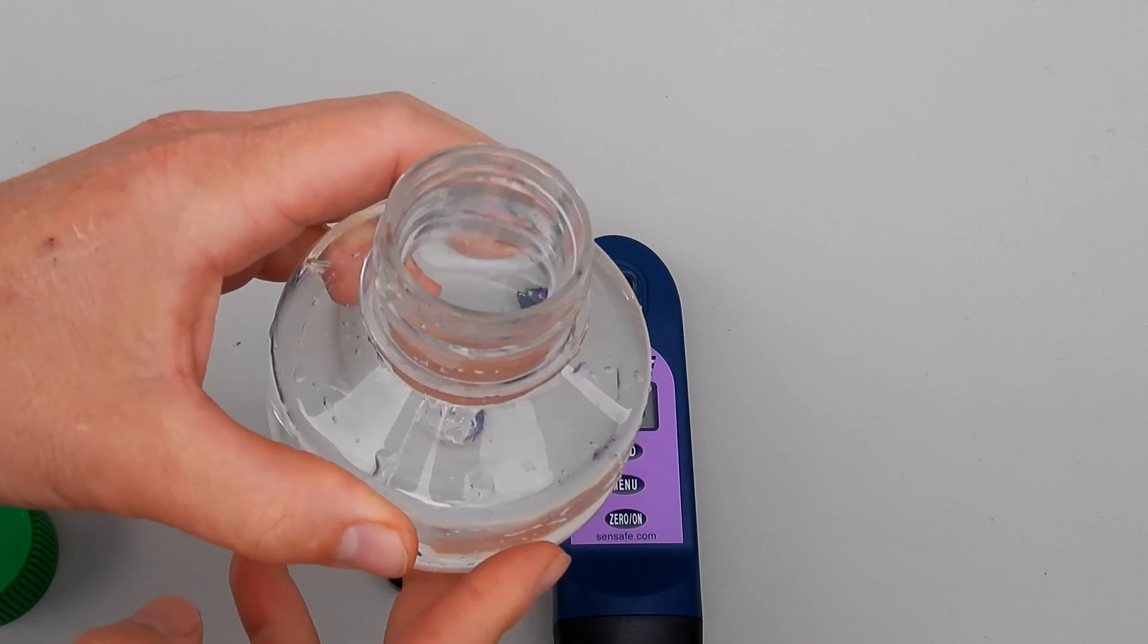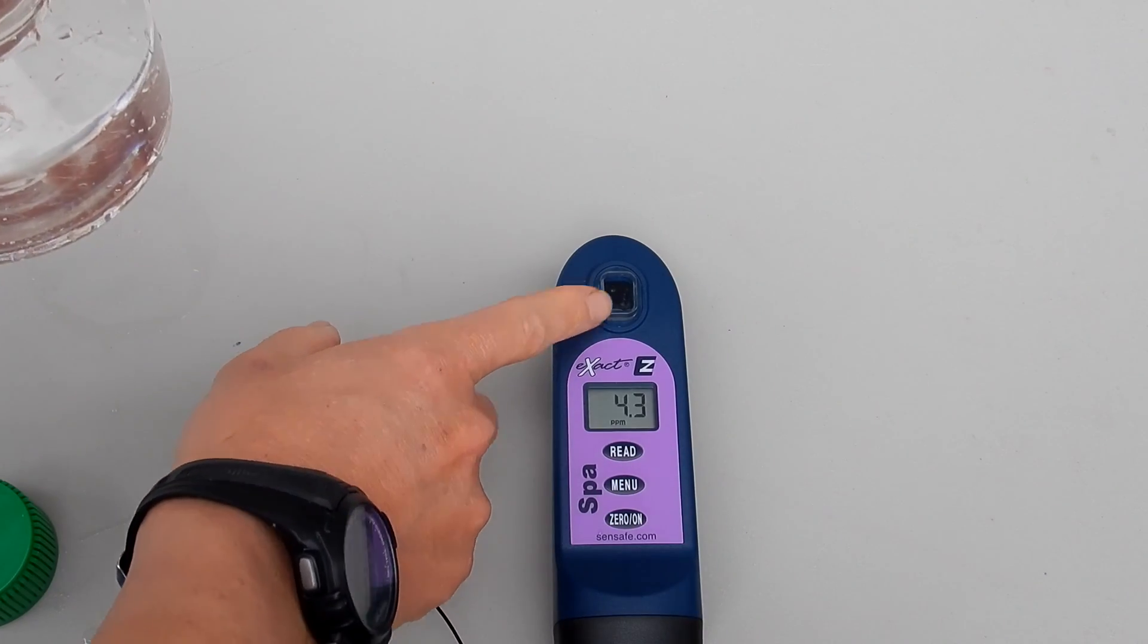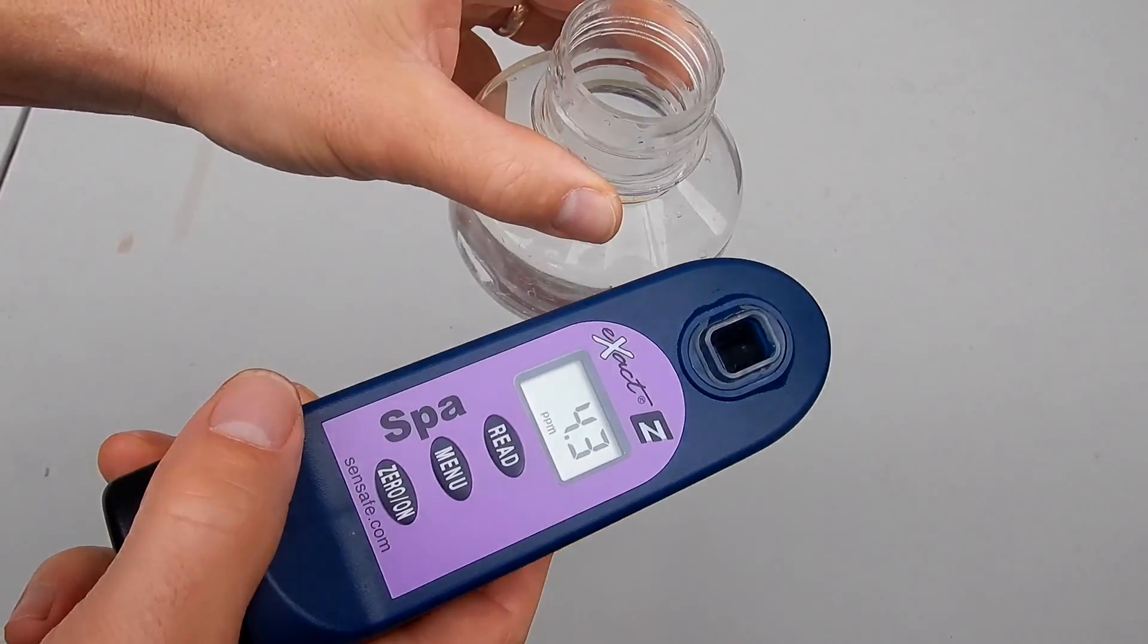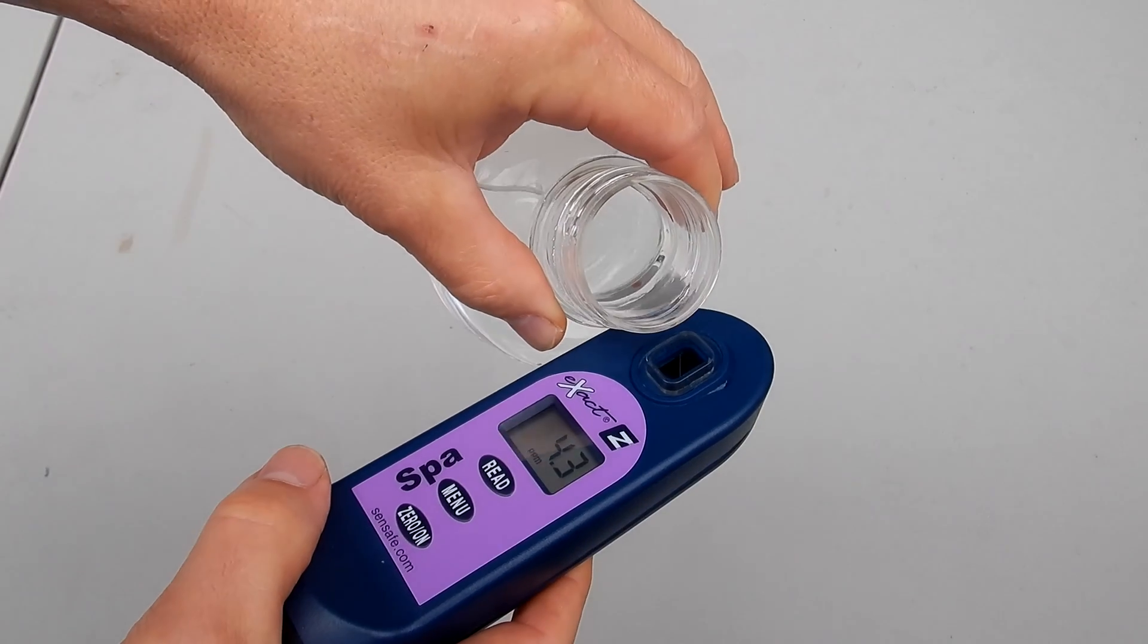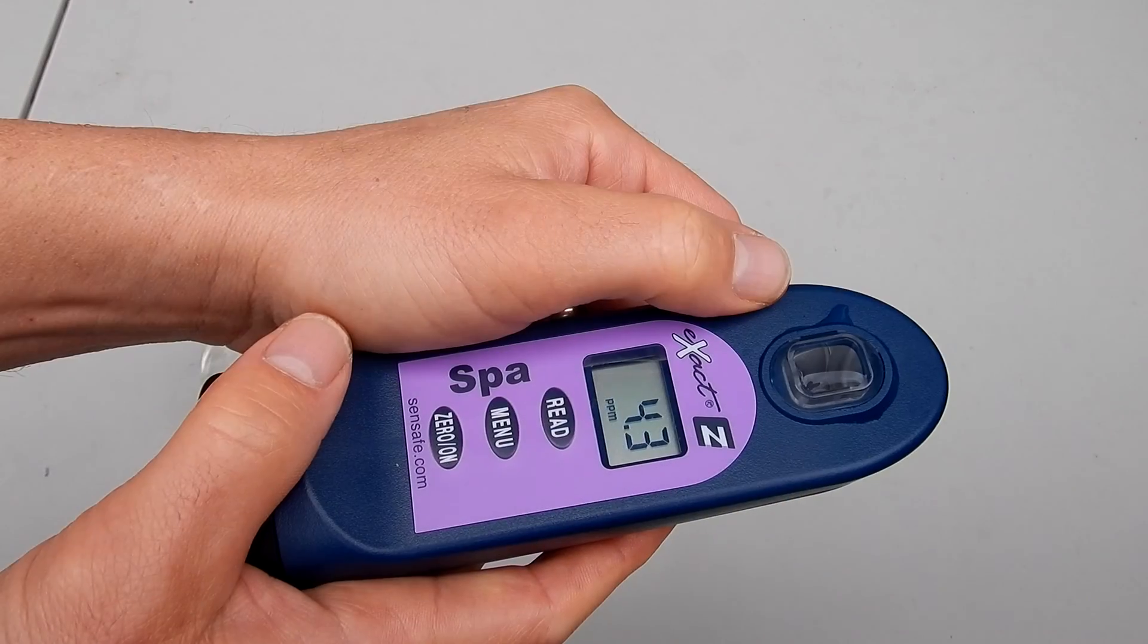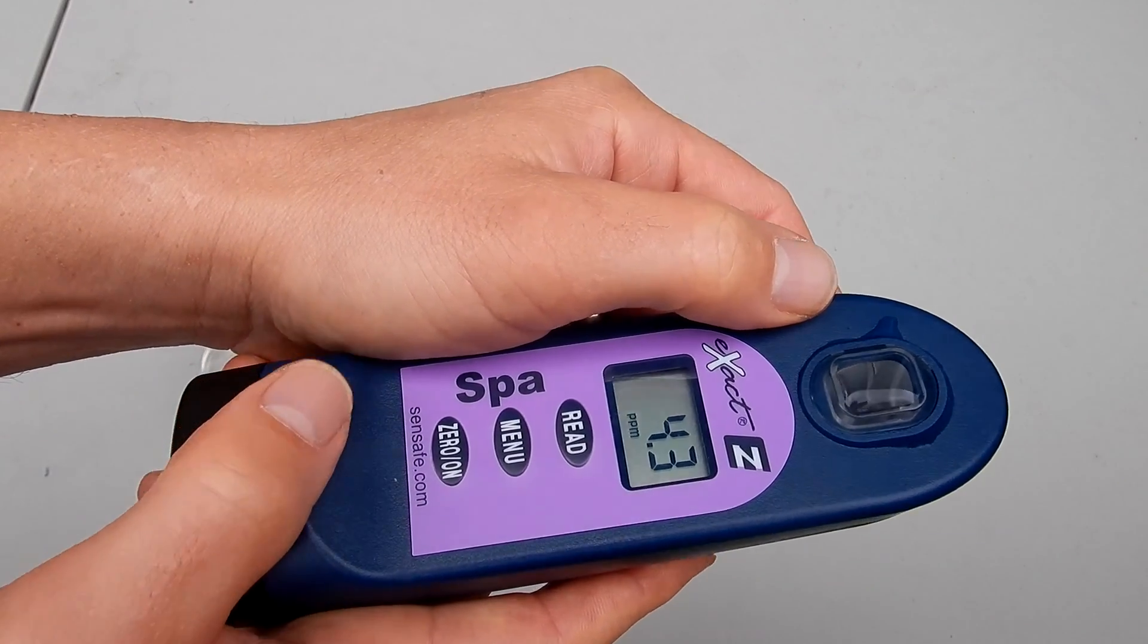To do the testing you just take your water sample and you'll fill the chamber to the top of the chamber. Also note that this tester is waterproof. For accurate testing results you want to make sure you fill the chamber to the top.